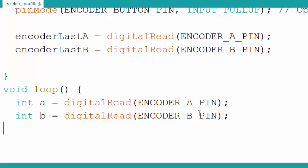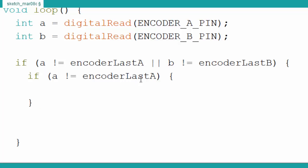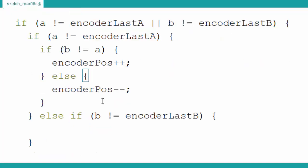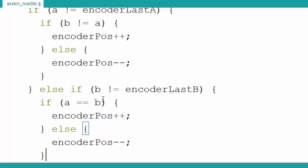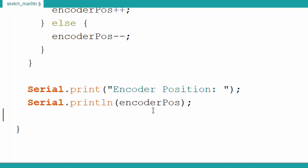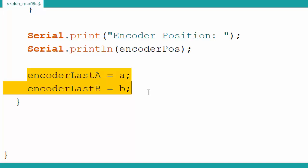In the loop, we read the encoder A state and encoder B state, then check if they have changed from the last state. If A or B is not equal to its last state, we determine which one changed. If B is not equal to A, it means the encoder is going in a positive direction; otherwise it's going in the negative direction. If B changed first, we check if A equals B, then increment the encoder position, otherwise decrement it.